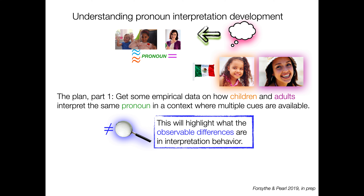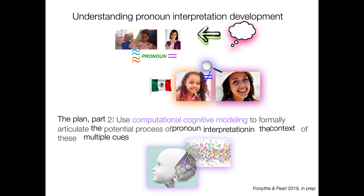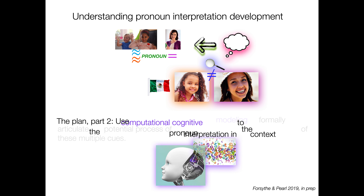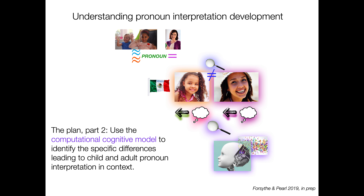This is going to highlight for us what the observable differences are in interpretation behavior that we want to understand. Next, part two, is we're going to use computational cognitive modeling to formally articulate the potential process of pronoun interpretation in the context of these multiple cues — that's what we're going to define with our computational cognitive model. We're going to use that model to identify the specific differences that lead to child and adult pronoun interpretation in context, so that we can understand what children need to do to become adults.